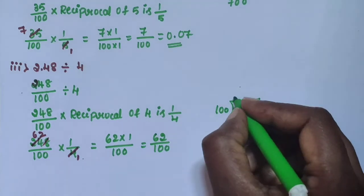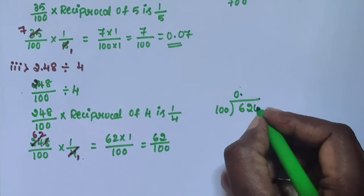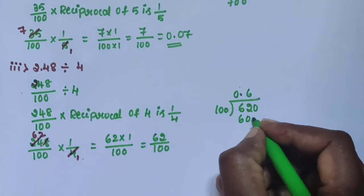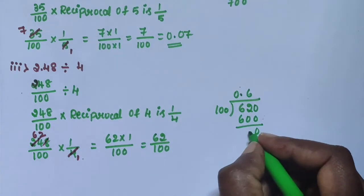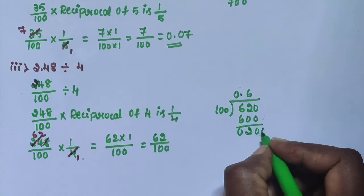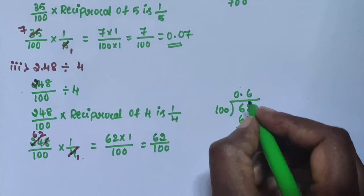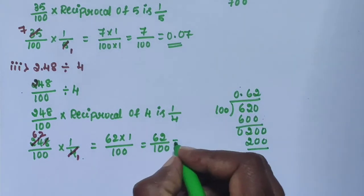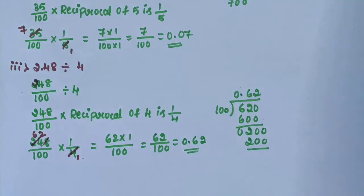62 is smaller than 100. Apply 0.0. 10 sixes are 600. Then 2 minus 0 is 2. Take another zero, 10 twos are 200. The answer is 0.62.